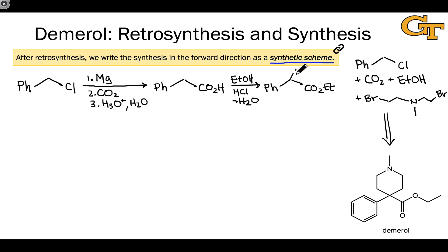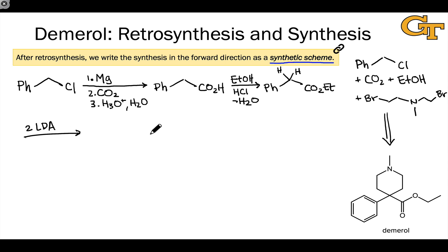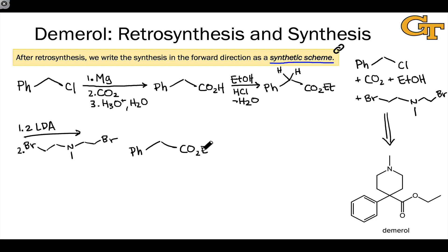Now we need to functionalize the alpha carbon, replacing its hydrogens with the two alkyl groups built into the cyclic amine functionality. To do this, we turn this into a nucleophile and hit with the bifunctional dihalide reactant. We can accomplish this using two equivalents of LDA — it's good to include the two to make the stoichiometry clear — and then this alkyl halide. With two equivalents of strong base, we can make both carbon-carbon bonds at the same time, and we've arrived at Demerol.